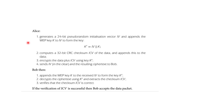In this example, Alice generates a 24-bit pseudo-random initialization vector (IV) and appends the WEP key to form a derived key K'. Next, Alice computes a 32-bit CRC checksum of the data and appends it to the data. That combined value (data + CRC) is encrypted using the derived key K'. Alice then sends the IV and the resulting ciphertext to Bob.